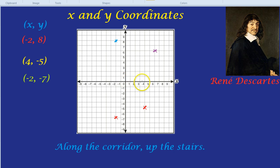Here you look along the corridor and up the stairs. So we have 6 along and then let's go all the way up: 1, 2, 3, 4, 5, 6 up. So this coordinate, let's do it over here, is (6, 6).